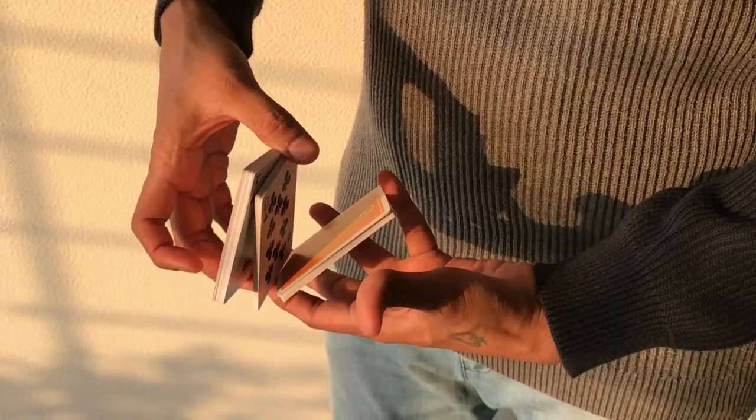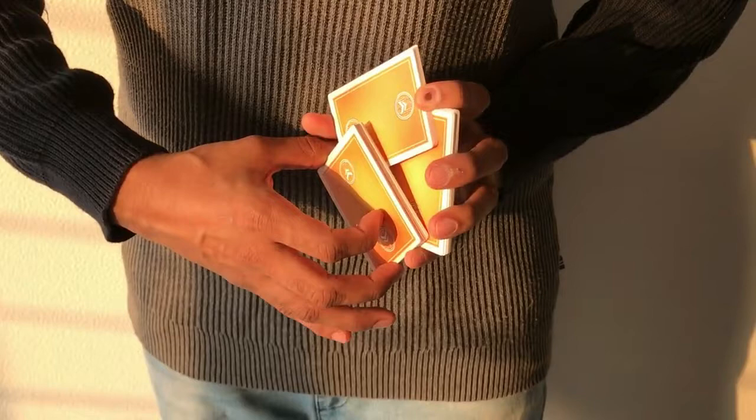So now you have this Z kind of formation. From here your pinky finger goes here, it re-grips and from here you make like a triangle kind of thing. Again you break the packet.